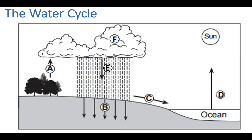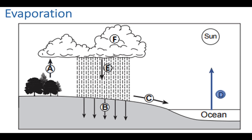This is a generic diagram of the water cycle. We're going to start with transpiration, which is the evaporation of water from any plant, leaf, tree, or grassy surface. On the other hand, you have traditional evaporation, where water from a lake, ocean, or river goes up into the atmosphere. So both evaporation and transpiration take liquid water from the surface and bring it up into the atmosphere as water vapor.